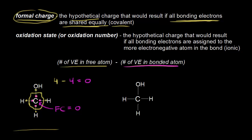Now let's move on to oxidation states — you could also call these oxidation numbers. One definition for an oxidation state is the hypothetical charge that would result if all of those bonding electrons are assigned to the more electronegative atom in the bond. Let's go to the dot structure on the right of methanol and assign an oxidation state to that carbon.